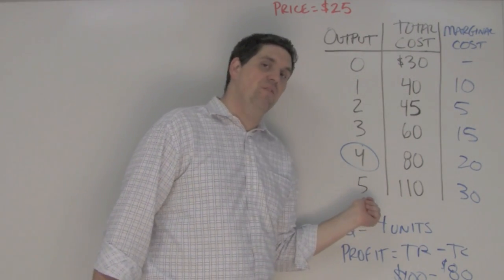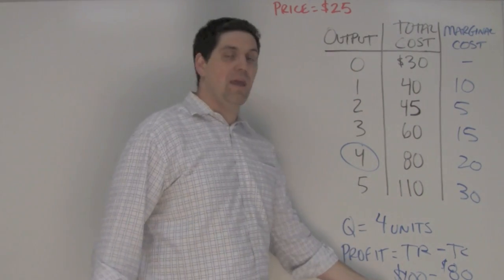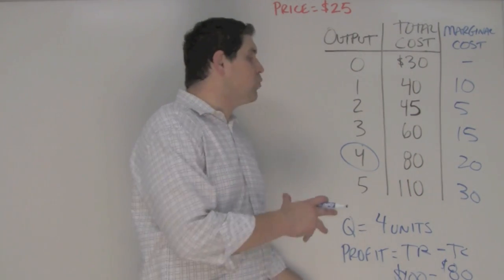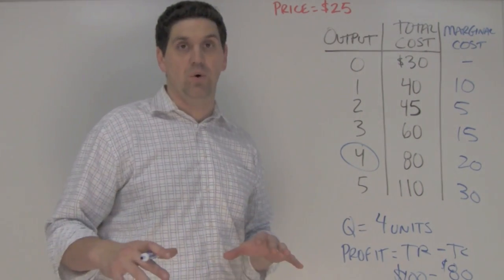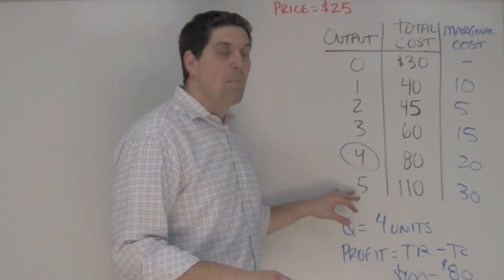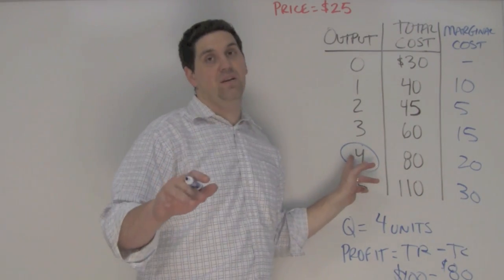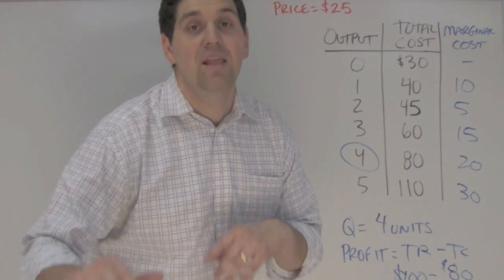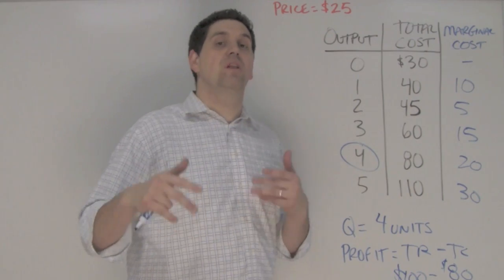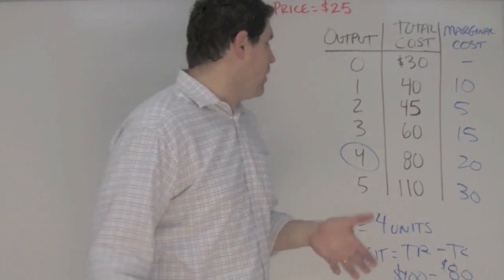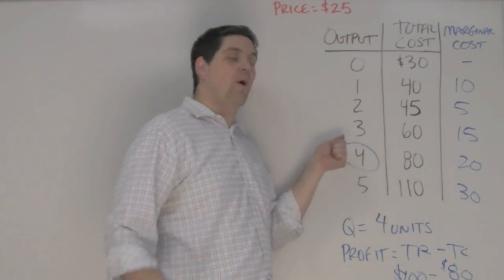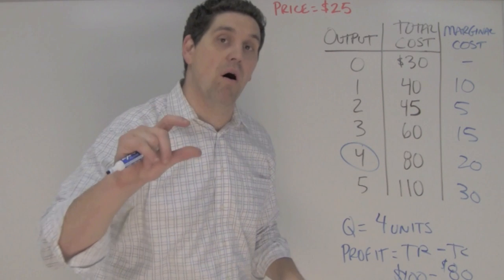There's no loss at producing five units. The problem is you're not making the most profit. This rule is called the profit maximizing rule. You can make profit for other units but this one's the one that has the most profit. This also applies when there's a loss. The profit maximizing rule is also the loss minimizing rule. So even if you're making a loss, producing where MR equals MC will give you the smallest loss.